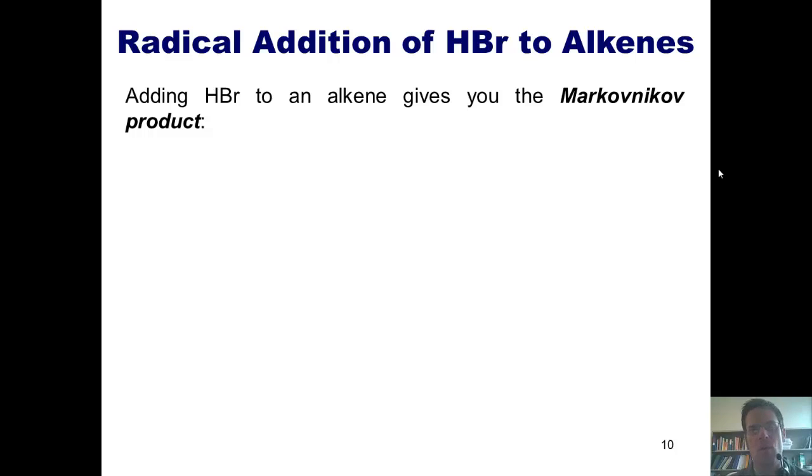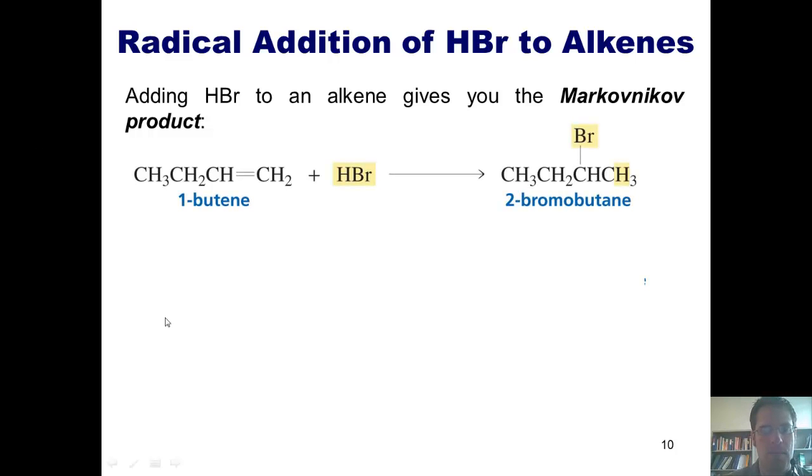As I've taught you before, back in chapter 4 or 5, when we add HBr to an alkene normally, what occurs is we get the Markovnikov product, as shown here. As you should remember, the electrons come out, grab the hydrogen.